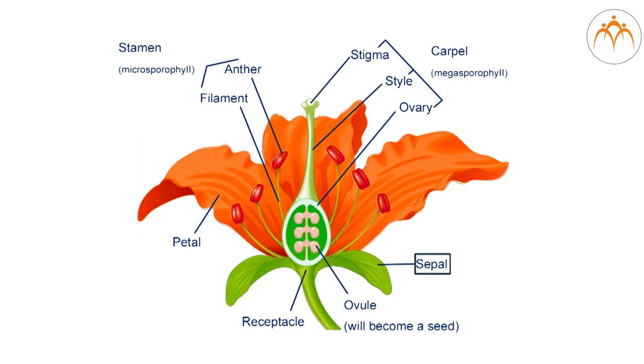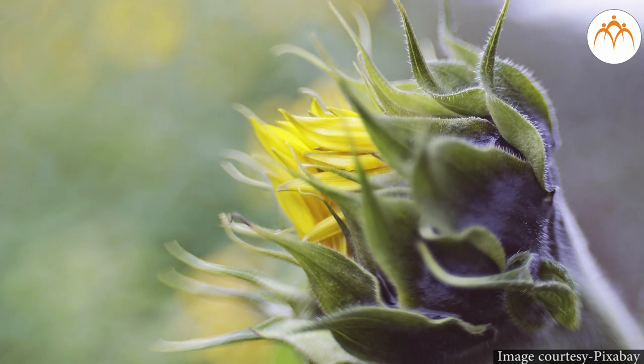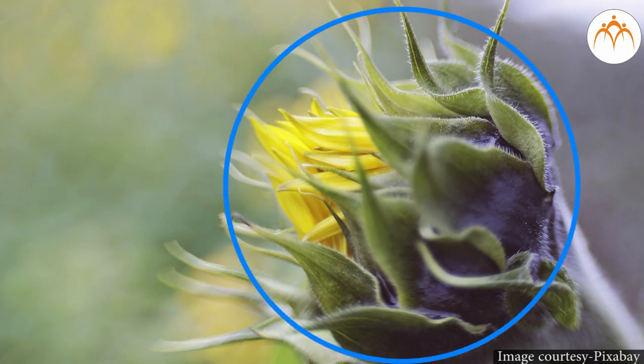Calyx. It is the outermost part of flower. Have you observed a flower bud? In a bud, we see green leaf-like parts covering petals. This is the calyx. A calyx has green colored sepals. It protects flower in bud condition.